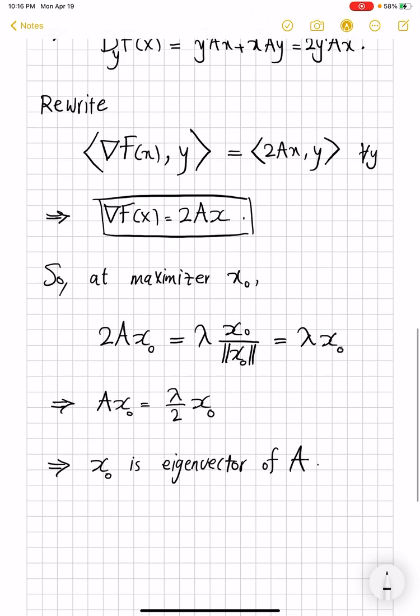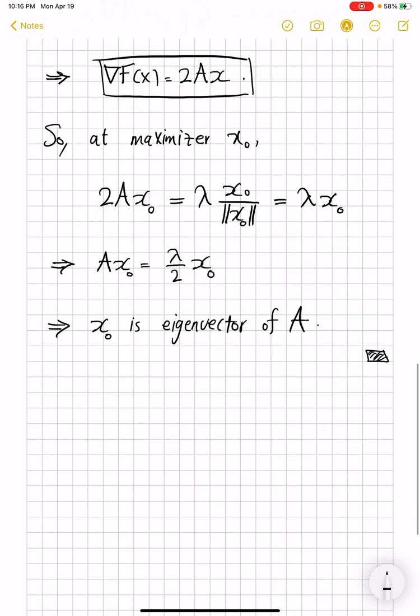So that ends the story there. But I want to actually draw some corollaries that are really interesting. So suppose we rename and call this lambda over 2, just our lambda prime. So this is the eigenvalue. So lambda prime equal lambda over 2 is the corresponding eigenvalue.